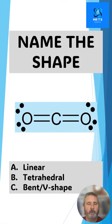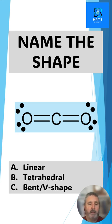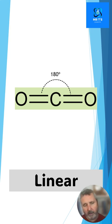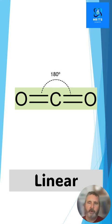Here is another molecule — this is carbon dioxide, CO₂. You can see two double bonds around the carbon here. Is this going to produce A a linear shape, B a tetrahedral shape, or C a bent shape? Of course this produces a linear shape, with only two electron density regions around the central carbon atom. They repel or push away from each other for maximum separation, producing angles of 180 degrees.